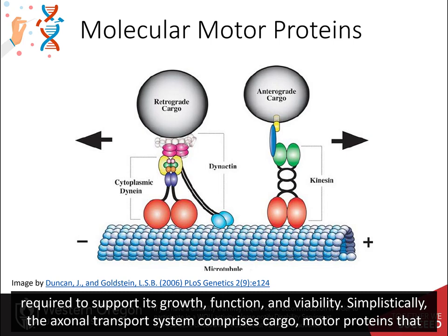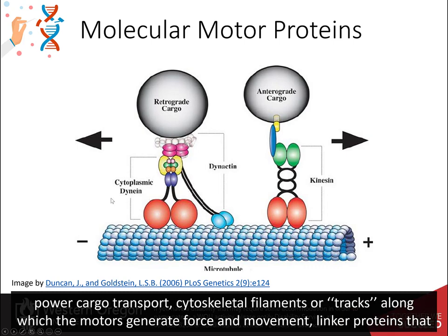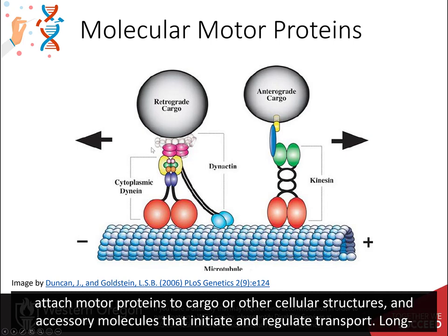Simplistically, the axonal transport system comprises cargo, motor proteins that power cargo transport, cytoskeletal filaments or tracks along which the motors generate force and movement, and linker proteins that attach the motor proteins to cargo or other cellular structures.